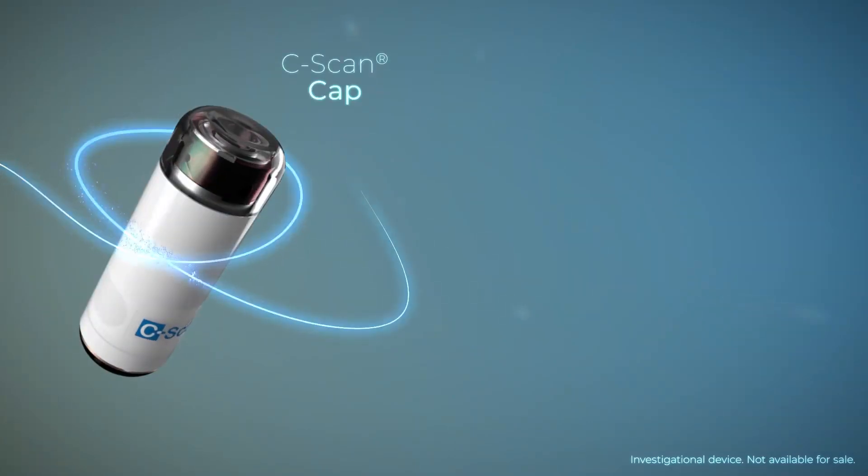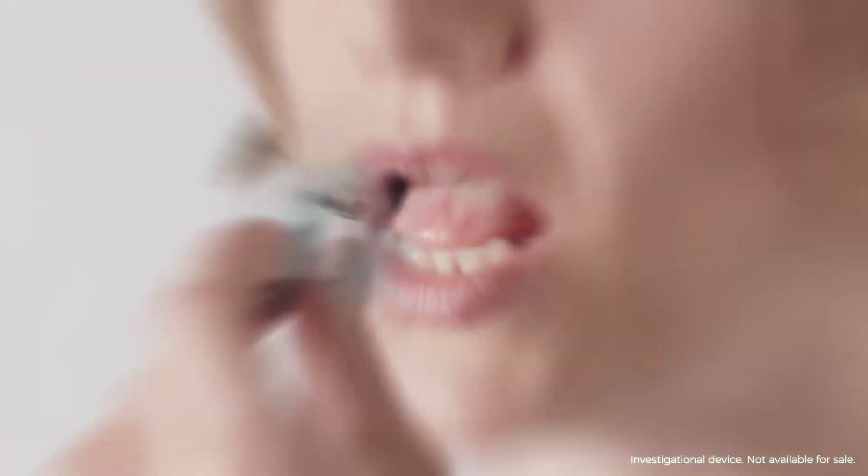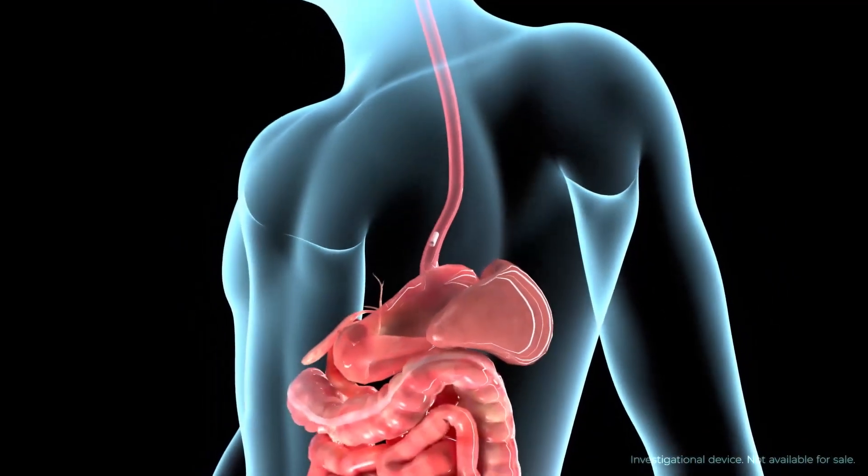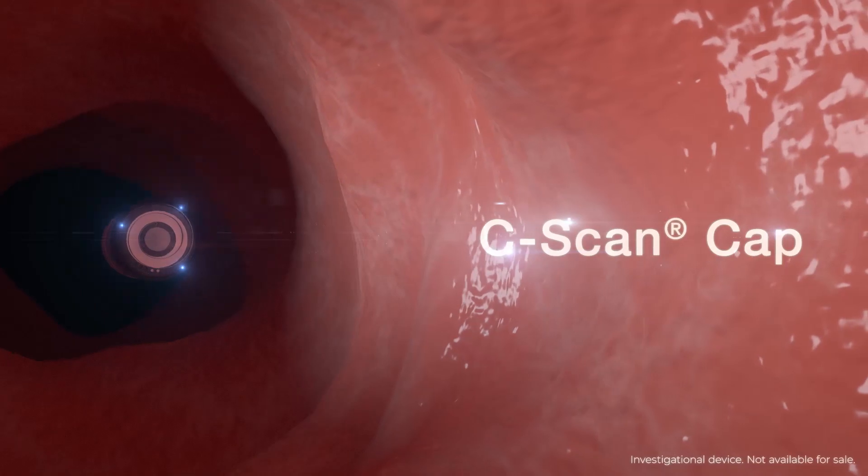The C-Scan system consists of three elements. C-Scan CAP is an ingestible, single-use imaging capsule that moves through the gastrointestinal track utilizing the patient's natural motility.